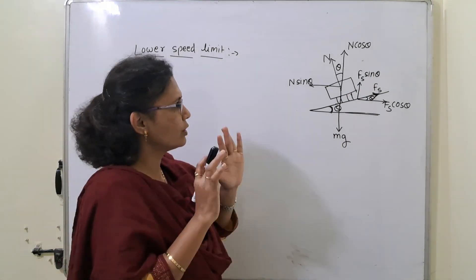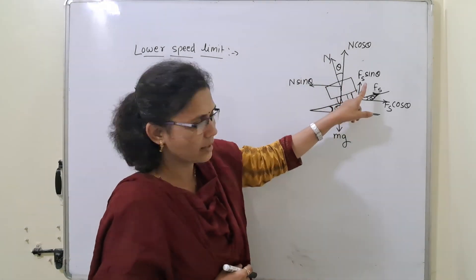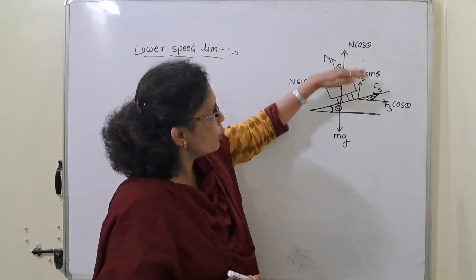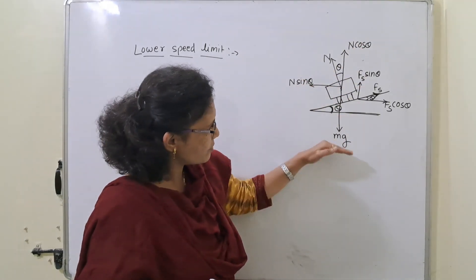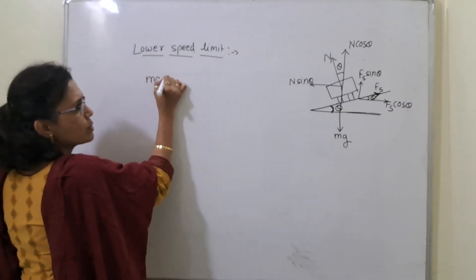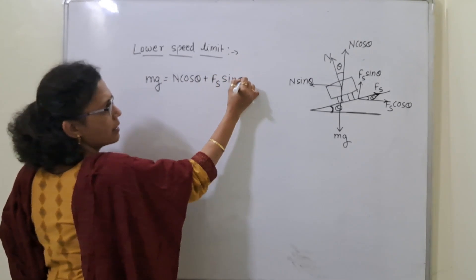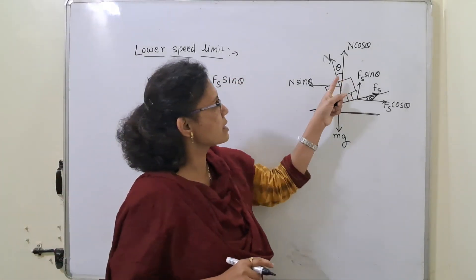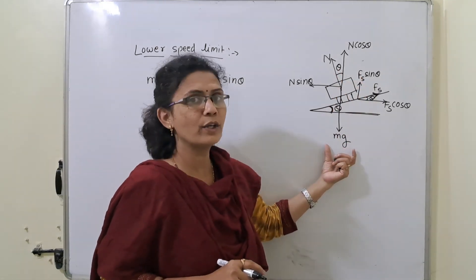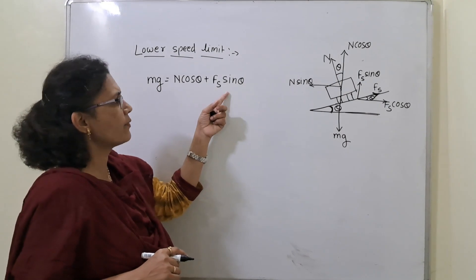Observing the diagram: N cosθ and fs sinθ are both directed upward, balancing the weight force mg downward. Therefore, Equation 1 is: mg = N cosθ + fs sinθ.